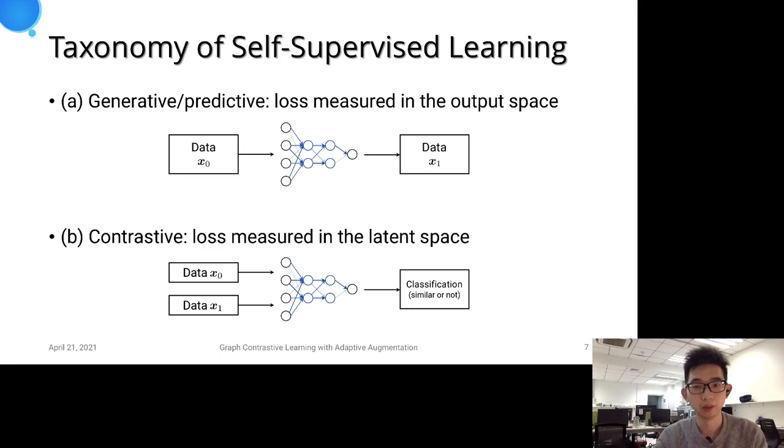In general, the proxy tasks fall into two lines of development. The first part, generative or predictive models, usually train the model in a supervised manner where the labels are self-generated from the data. The other category, contrastive learning,